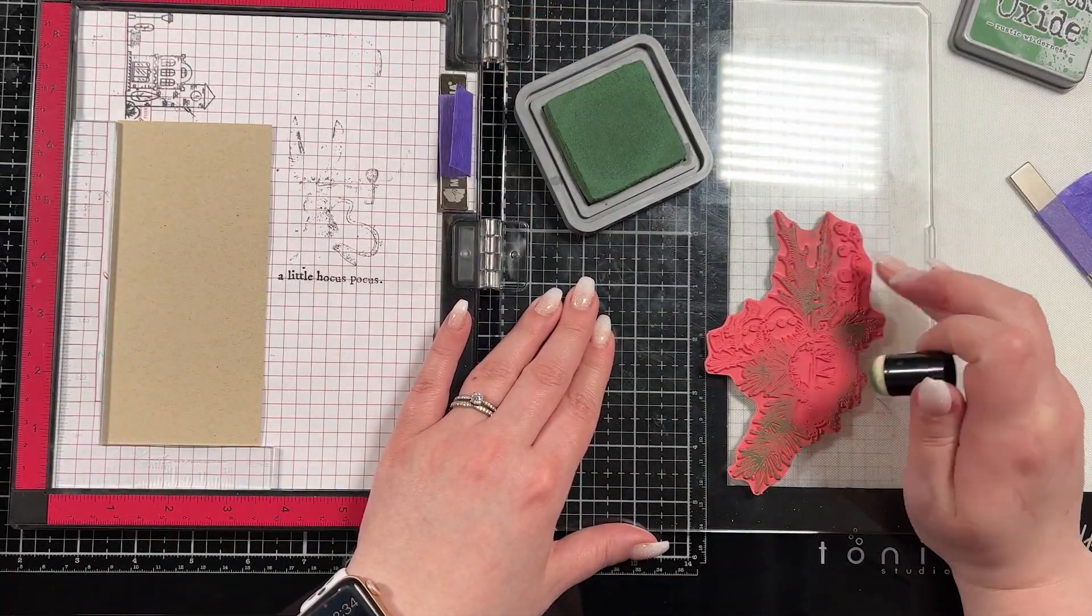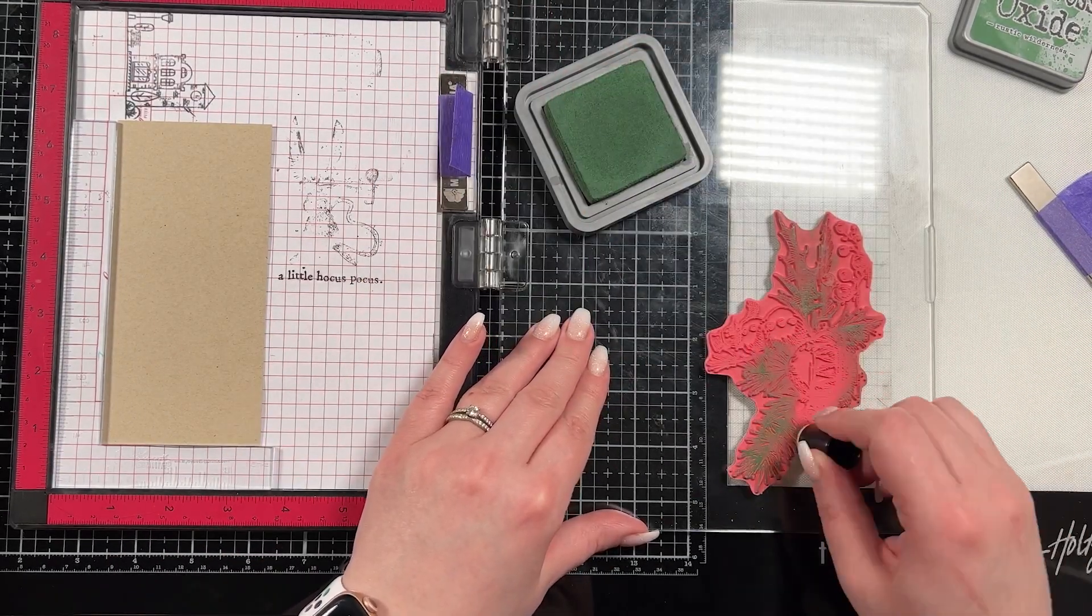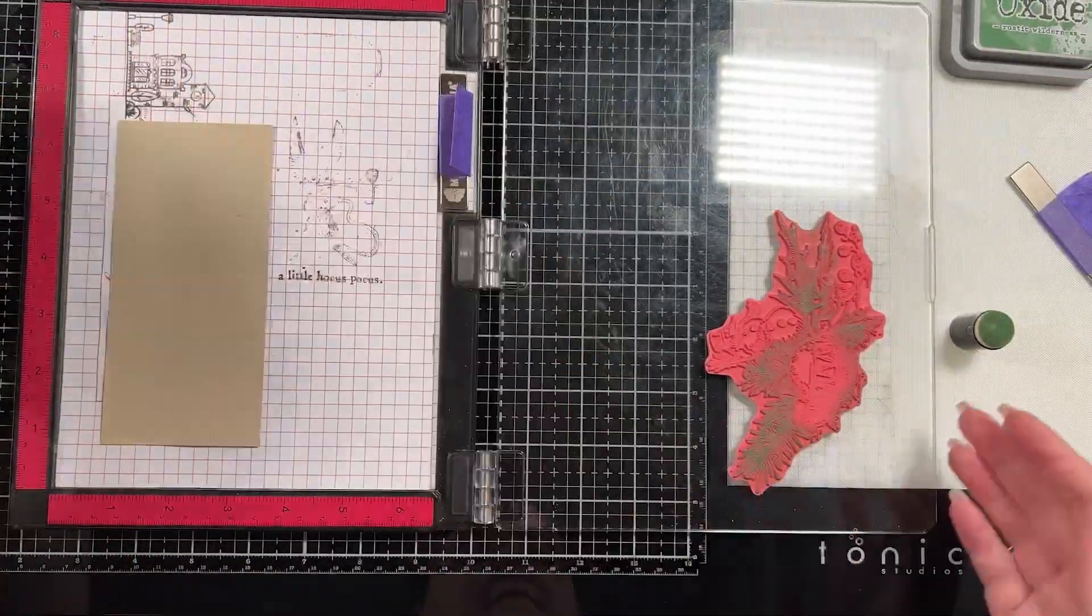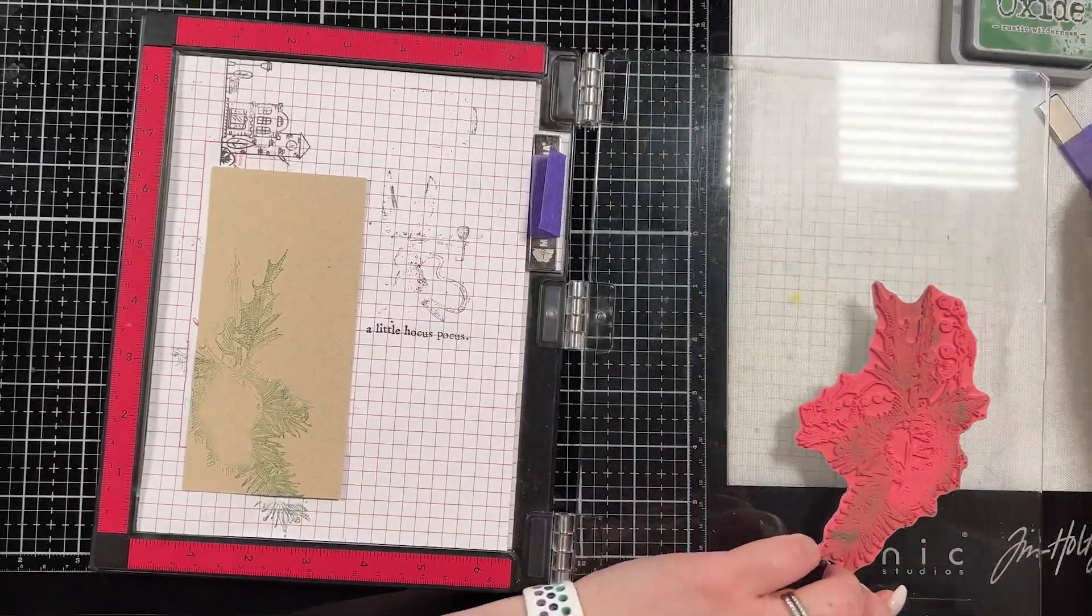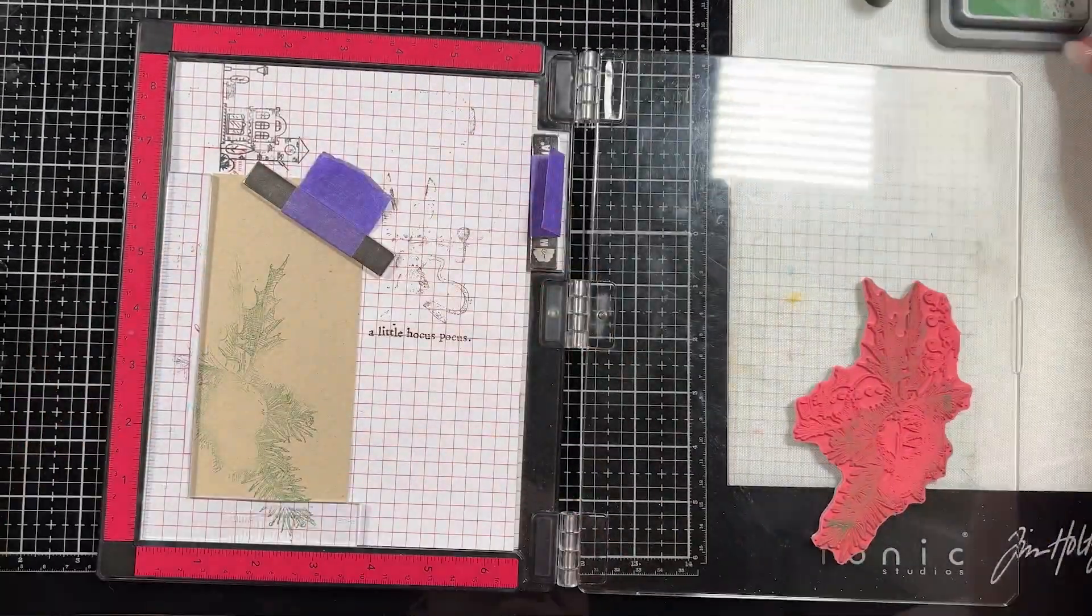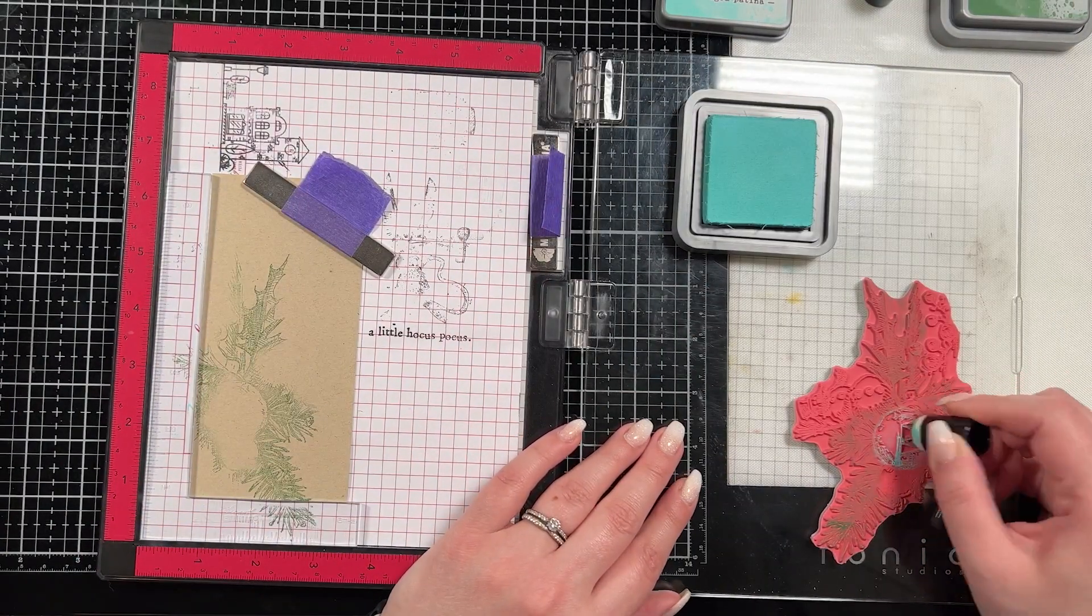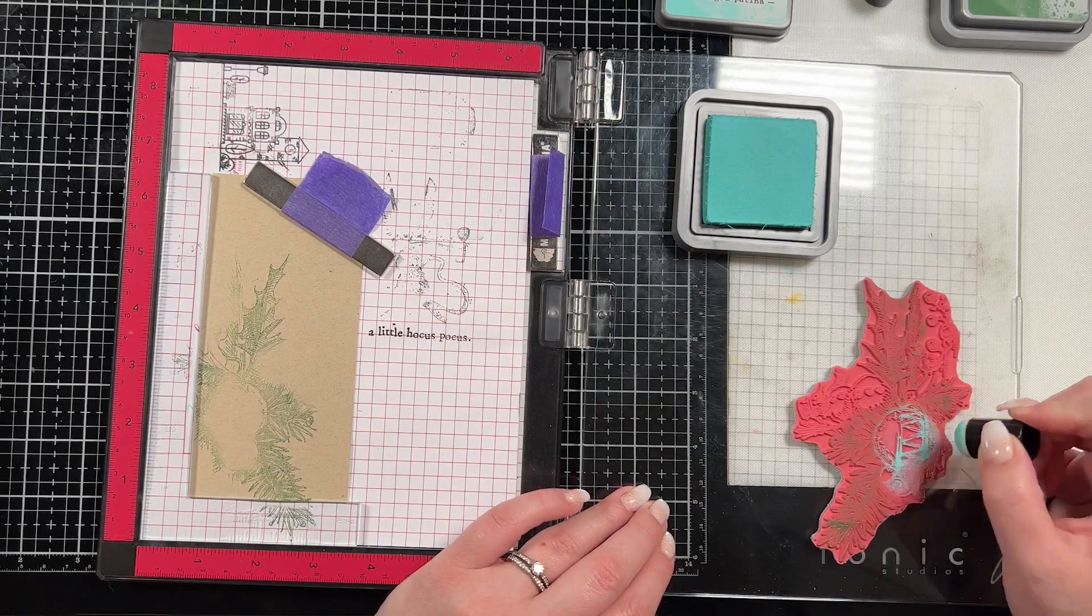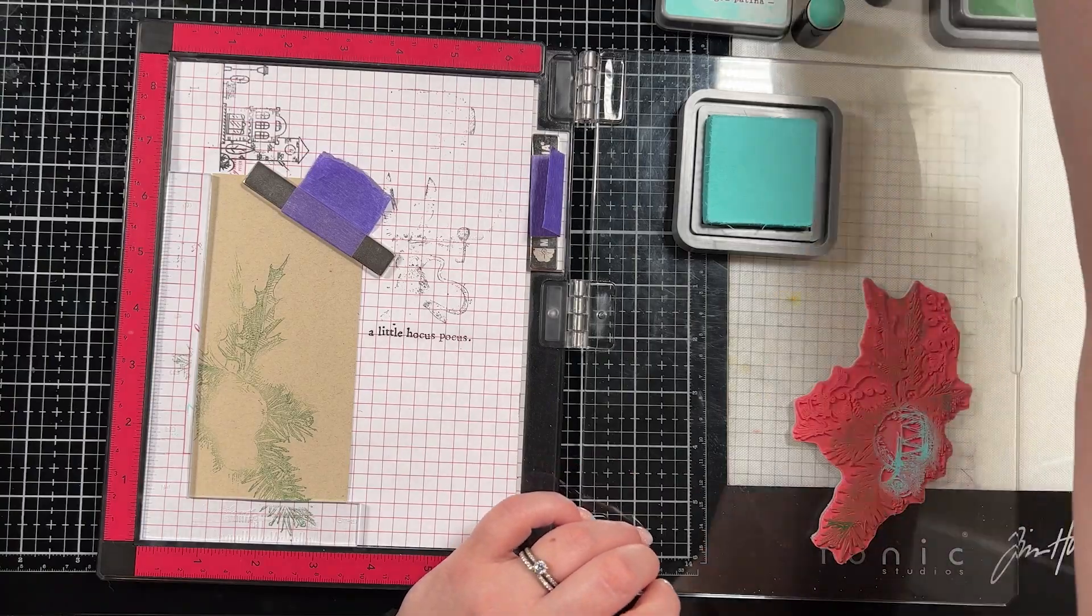And I just use my finger dauber to color in the areas that I want to have that color. So in this case of this image, I have the rustic wilderness for the leaves. And I did bring in a creative corner in my Misti as well, just so that my stamp could hang off of the edges. And then I forgot to put my magnet on it here. You see that I make sure that it's aligned and put my magnet in it. And then I'm just going to use different finger daubers for each color because I don't want to muddy them.